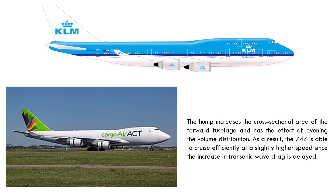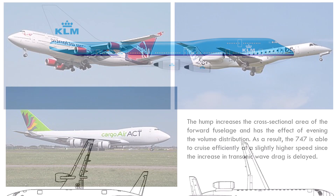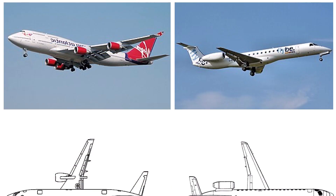As a result, the 747 is able to cruise efficiently at a slightly higher speed than most other airliners, since the increase in transonic wave drag is delayed. The area rule is also one of the reasons for placing large jet engines slightly ahead of the wings in most modern airliners, and in some aircraft the engines are mounted behind the wing for the same reason.